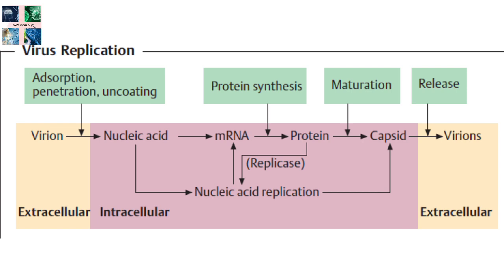The fourth stage is replication, which primarily involves multiplication of the genome. This includes synthesis of viral messenger RNA from early genes, viral protein synthesis, possible assembly of viral proteins, and viral genome replication mediated by early or regulatory protein expression. The fifth stage is assembly, involving the structural self-assembly of the virus particle, with some modification of proteins often occurring. The sixth stage is release — viruses are released from the host cell by lysis, a process that kills the cell by bursting its membrane and cell wall if present, which is a feature of many bacterial and some animal viruses.